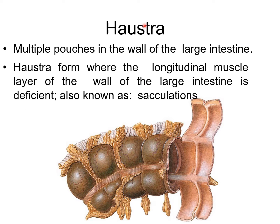About haustra — they are pouches seen in the wall of the large intestine. Haustra form where the longitudinal muscle layer of the wall is deficient, and they are otherwise called sacculations. In between the longitudinal muscle fibers there are outward pouches; wherever the muscle is deficient, there is sacculation, and those are called haustra.